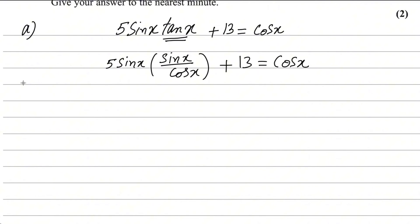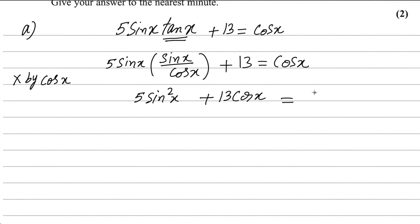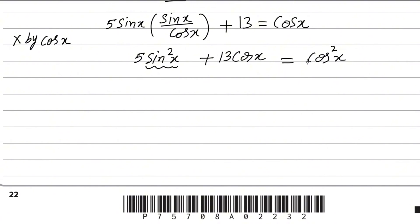To get rid of the denominator, multiply every term by cosx — this is the easiest way to handle fractions. When you multiply by cosx, the cosx in the denominator cancels, leaving 5sin²x. Then 13·cosx = cos²x. Now replace sin²x using the identity sin²x = 1 − cos²x.